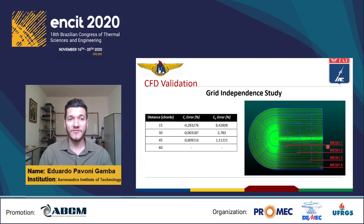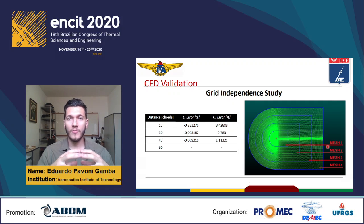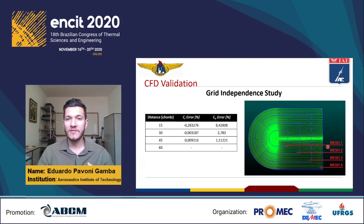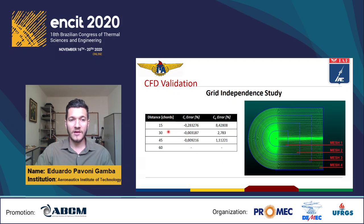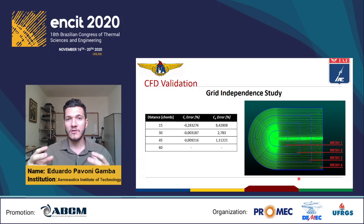Regarding CFD validation, to perform CFD simulations we need to construct a computational mesh. The size of this mesh was defined by a grid-independency study, where we considered four different domain sizes. Selecting the largest one as a reference and adopting a maximum error criteria of 5% for CL and CD — the lift and drag coefficients — this table shows that the second mesh already has sufficient precision without needing to enlarge the mesh domain too much.